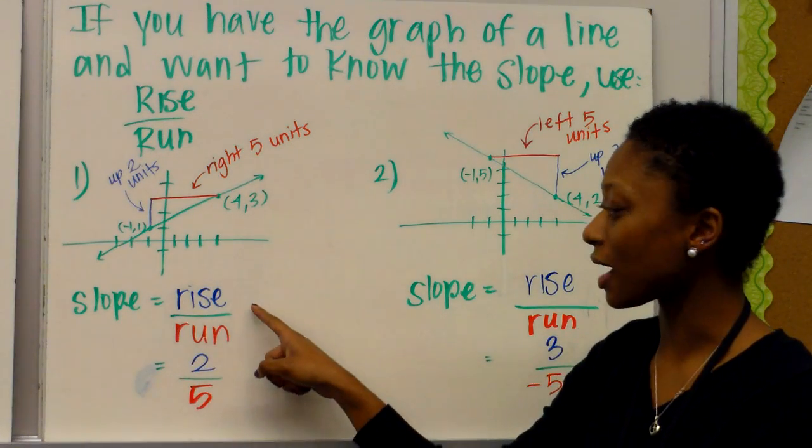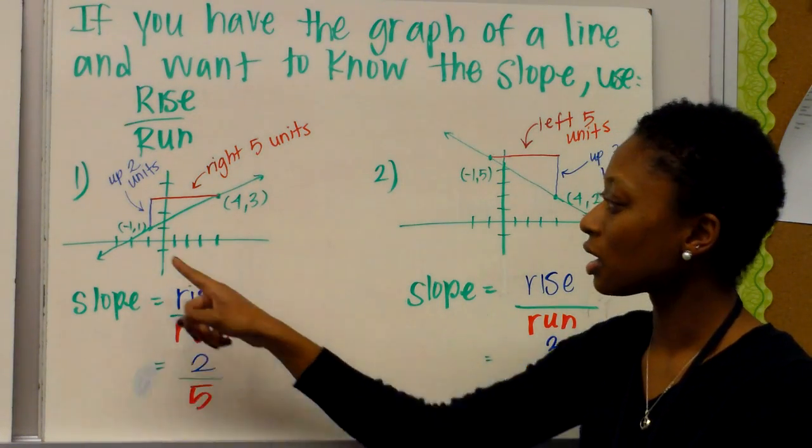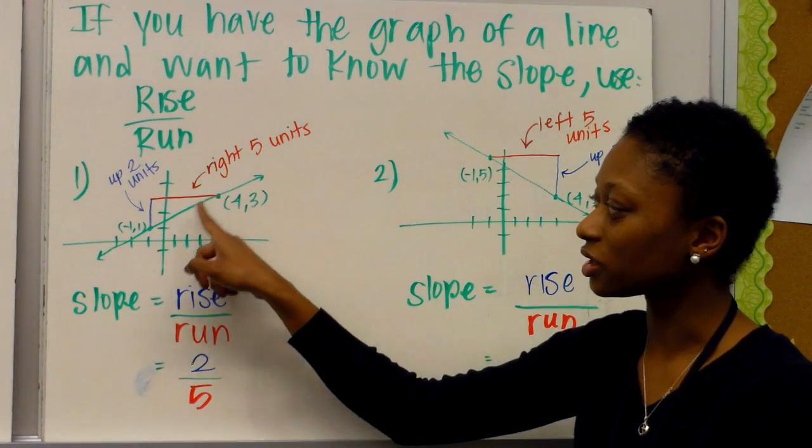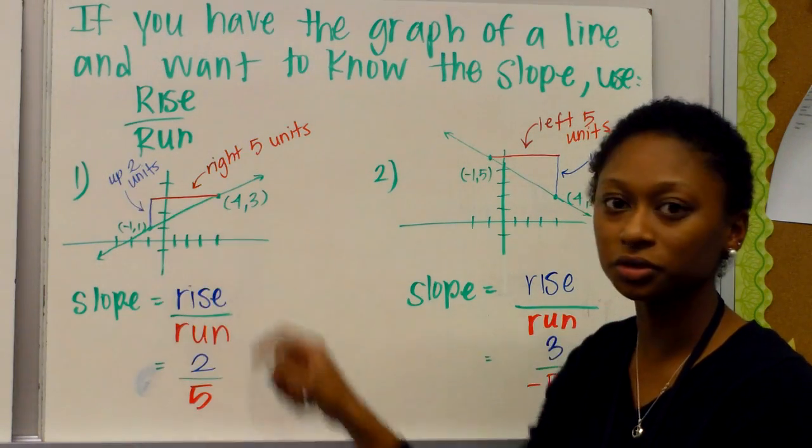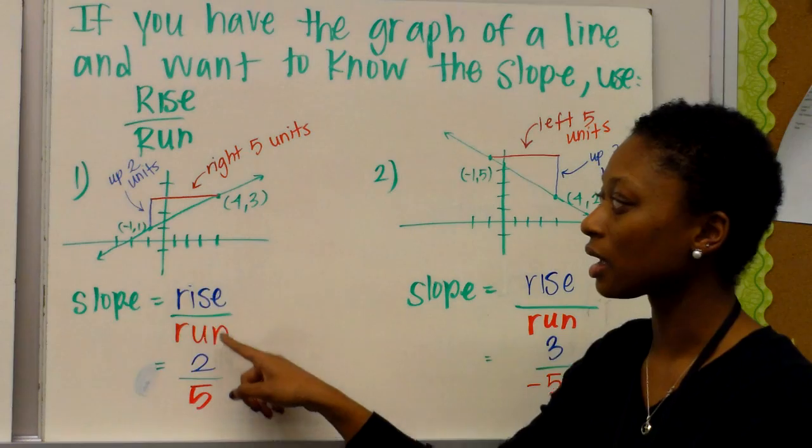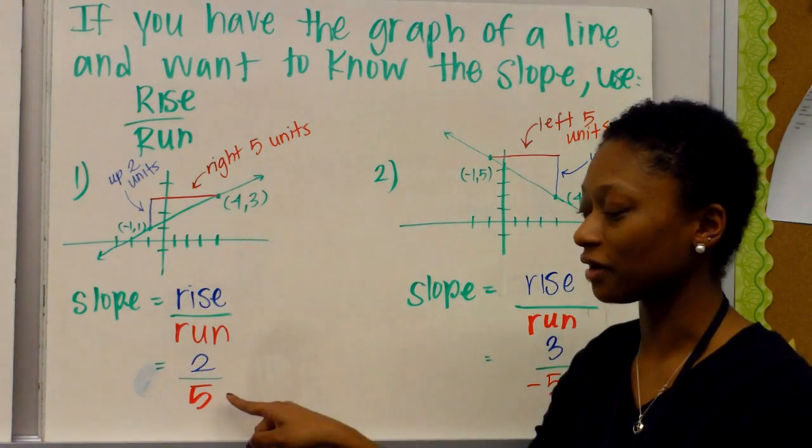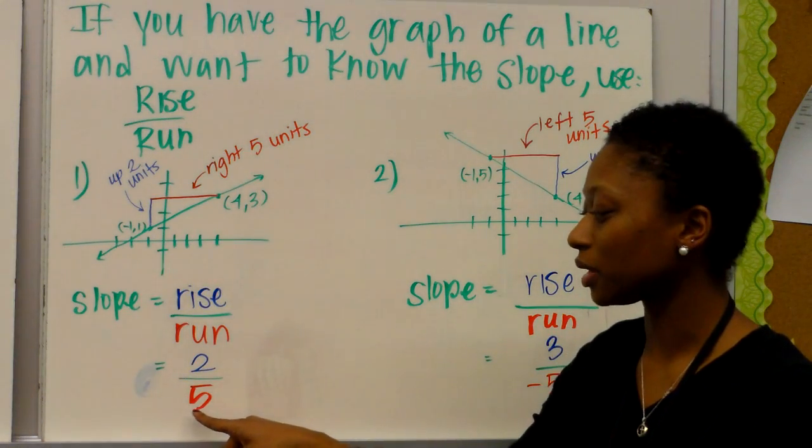Slope, again, is rise over run. So from this point to get to this point, I have to go up two units. That's my rise. And I have to go to the right five units.